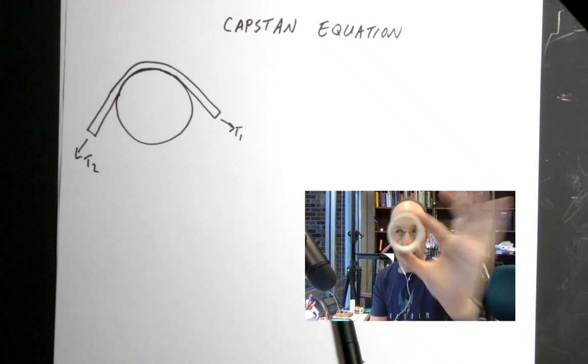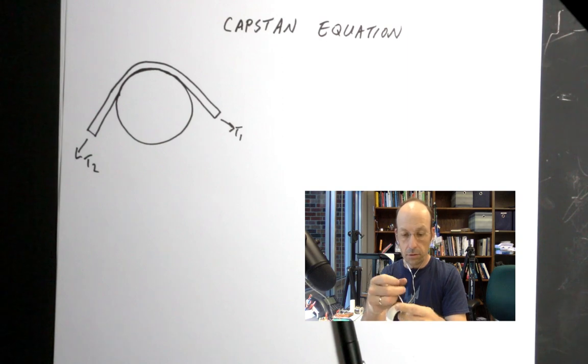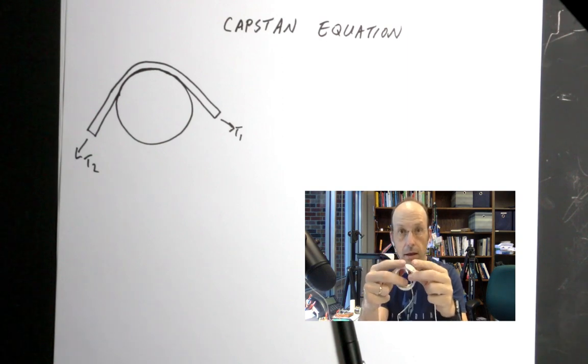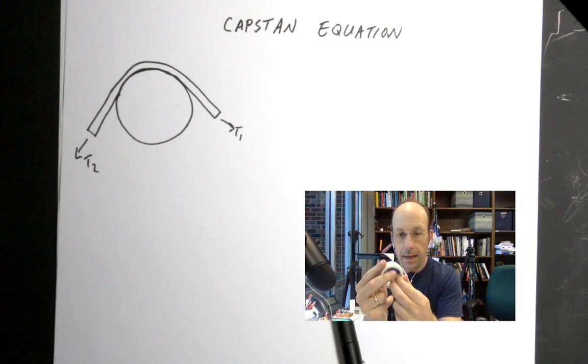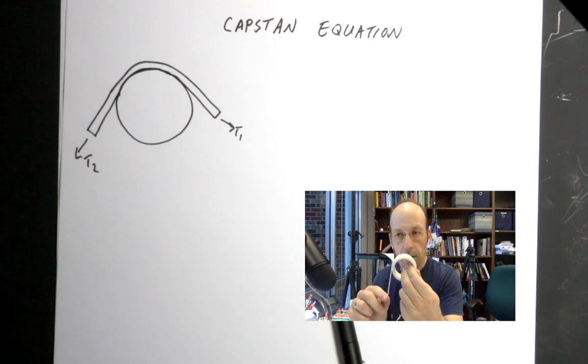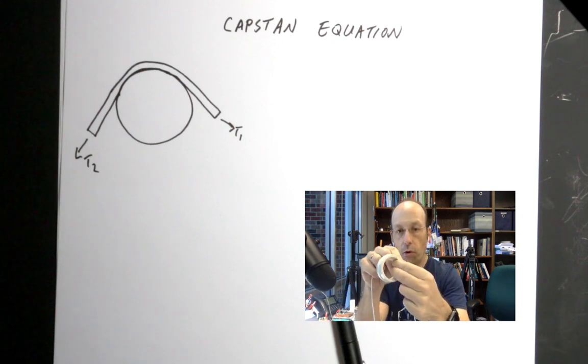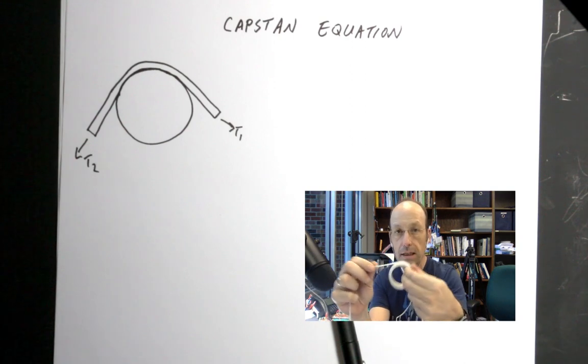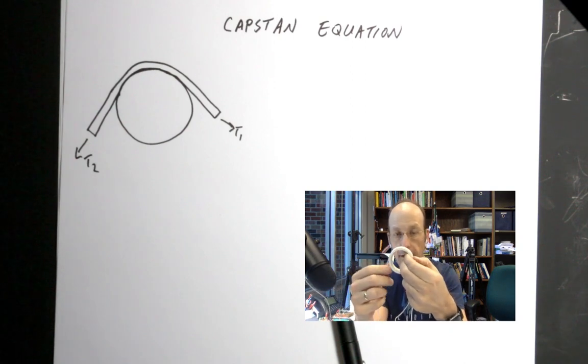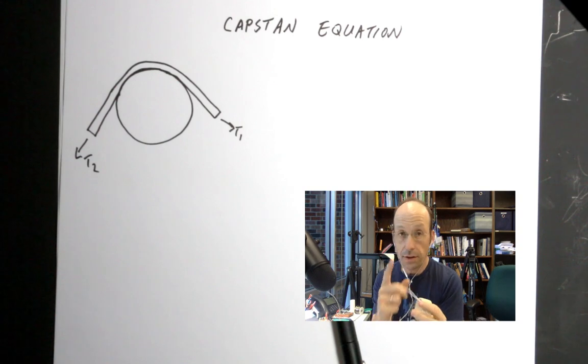So this is a circle and that's a string. But what about if you wrap something around it and you pull? The more you wrap around it, the more friction you get in between the string and the cylinder. So this is called the Capstan equation.